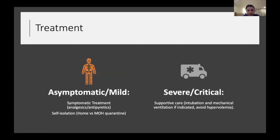Treatment for asymptomatic and mild patients is mainly symptomatic — analgesia and antipyretics — and the most important thing is self-isolation either at home or in the Ministry of Health quarantine. For severe and critical patients, supportive care remains the main management approach, and hypervolemia should be avoided as it is associated with worse outcomes.